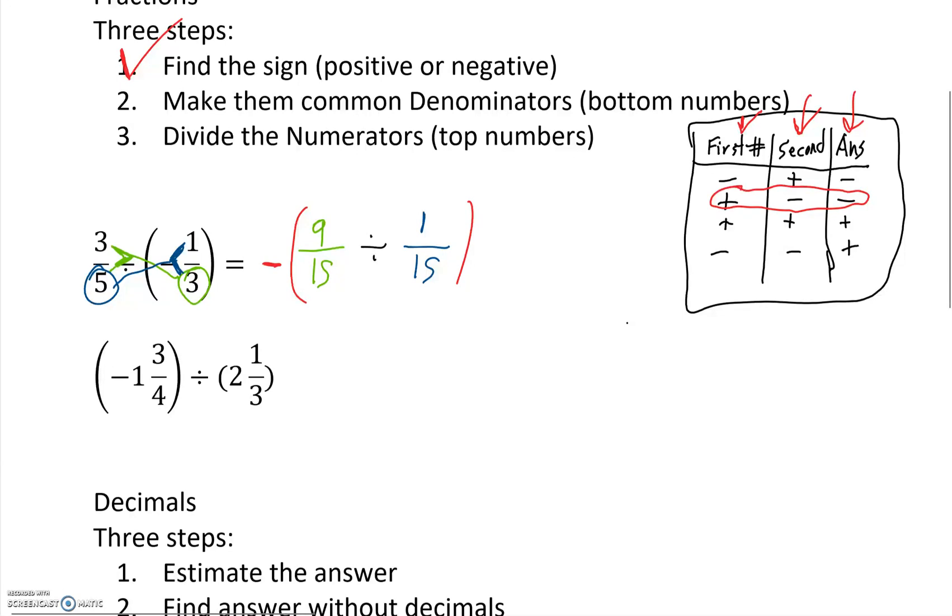So let's make that a green check mark. And then the last step says divide the numerators, or the top numbers.